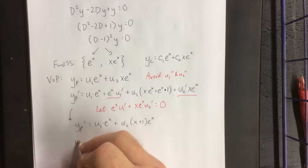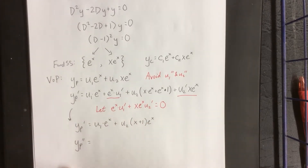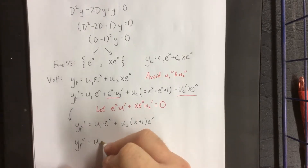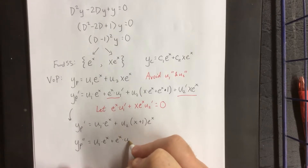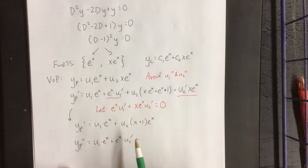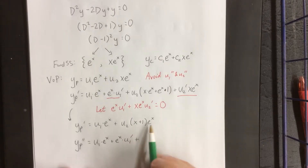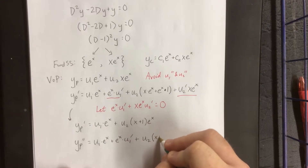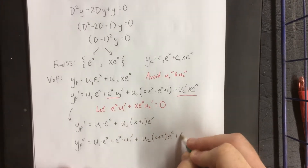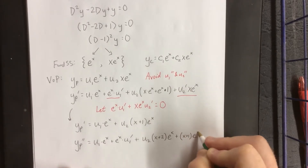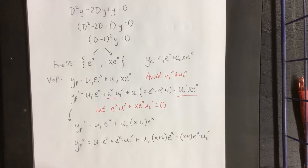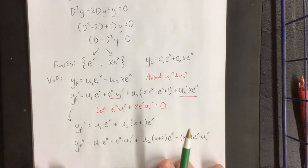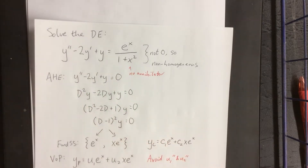Now we'll take a second derivative, and after that second derivative, we'll plug it back into the original differential equation and see what we get. Once again we'll see a first times derivative of the second, plus second times the derivative of the first. The observation to make is that every time we differentiate x times e to the x, we're going to be adding however many derivatives we've taken to the x. We'll take this second derivative, this first derivative, and this original function, and plug it back into the original differential equation.